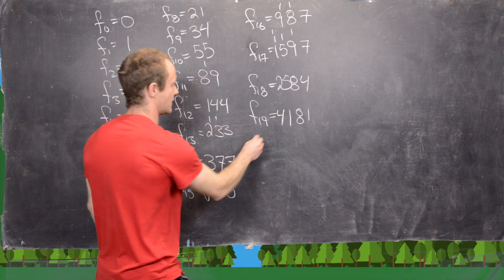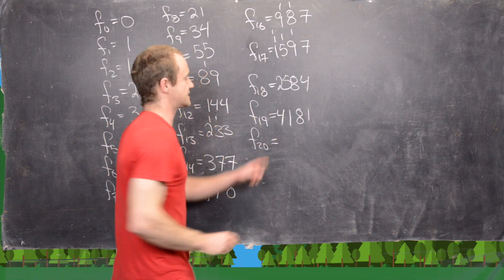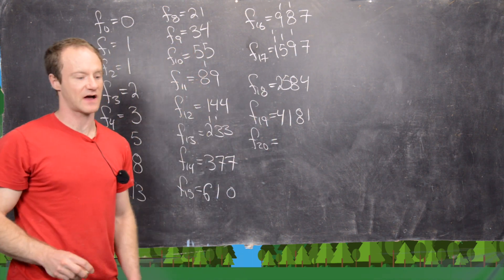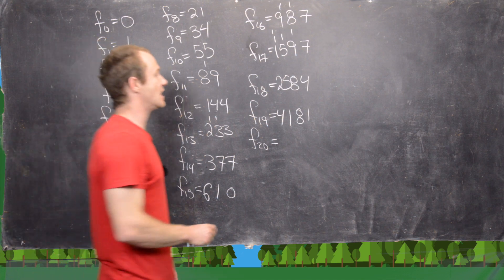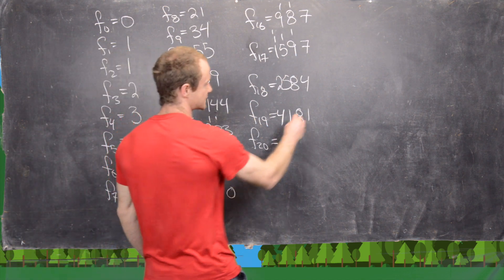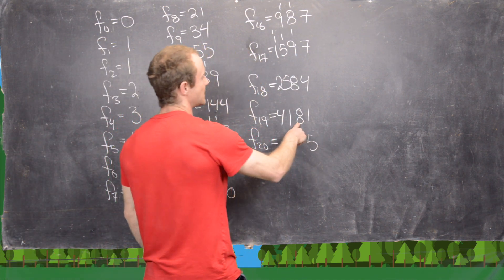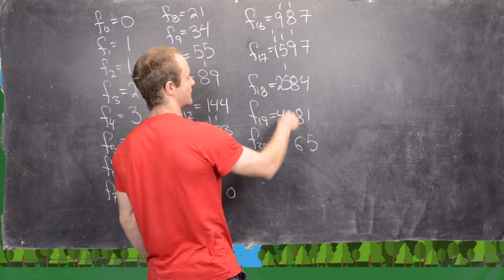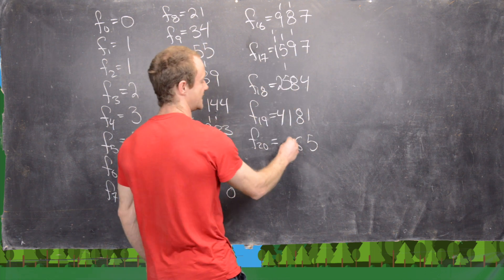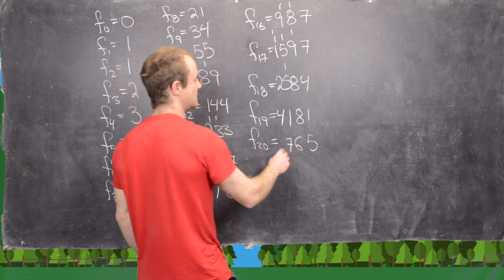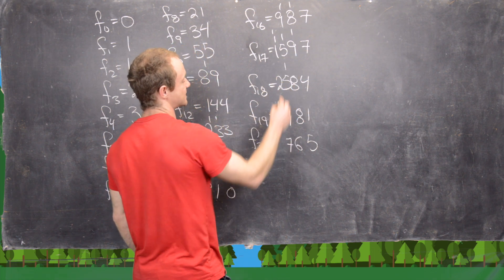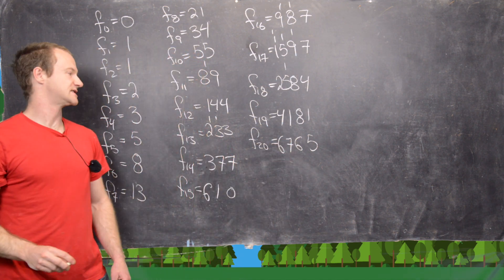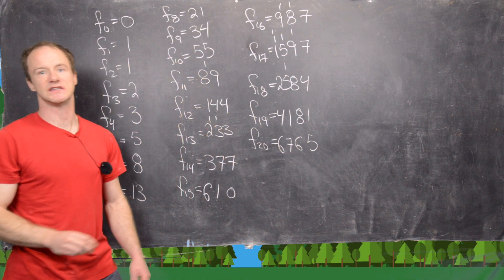And then the 20th Fibonacci number is 4,181 plus 2,584. So let's see: we have 5 down here, 8 plus 8 is 16, so we'll carry the 1. 5 plus 1 plus 1 is 7. And then 4 plus 2 is 6. So we have 6,765.